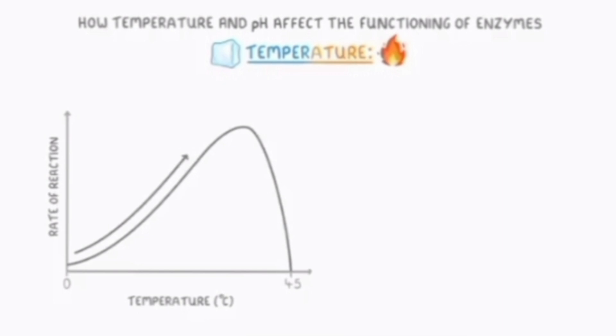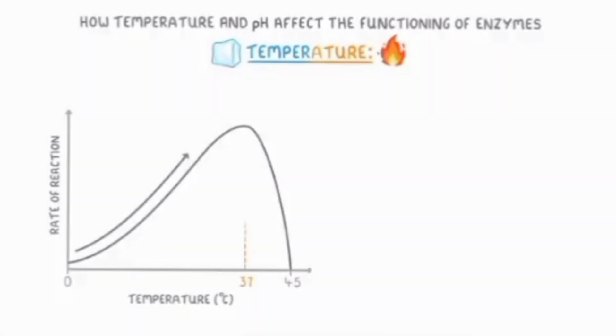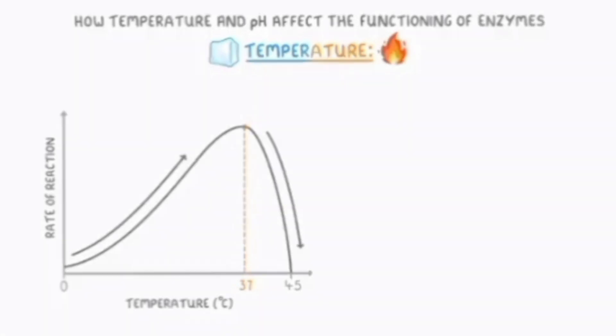And hence, the rate of enzyme catalyzed reaction also increases. But after 37 degrees centigrade, the rate of reaction rapidly slows down.